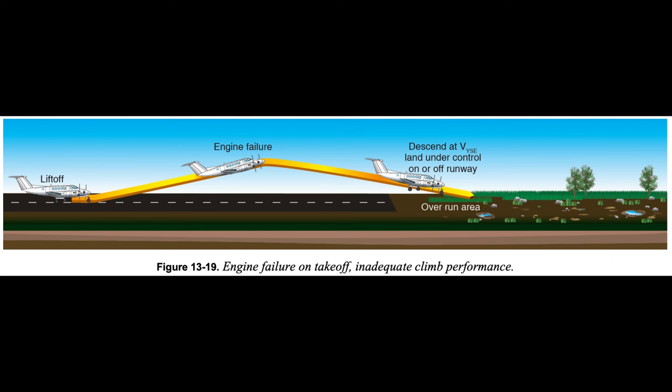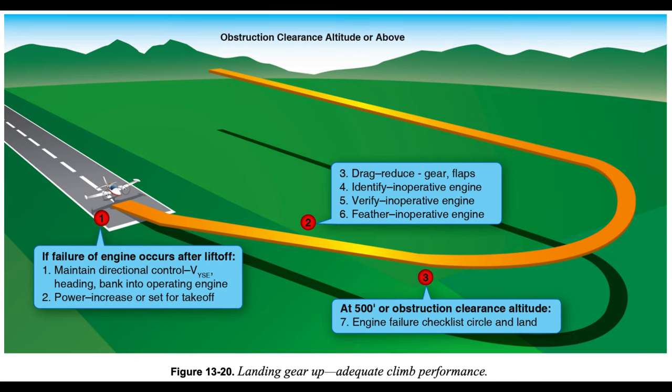Analysis of engine failures on takeoff reveals a very high success rate of off-airport engine-inoperative landings when the airplane is landed under control. Analysis also reveals a very high fatality rate in stall-spin accidents when the pilot attempts flight beyond the performance capability of the airplane. Landing gear control selected up, single-engine climb performance adequate: If the single-engine rate of climb is adequate, the procedures for continued flight should be followed. There are four areas of concern: control, configuration, climb, and checklist.